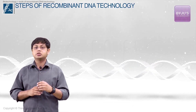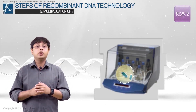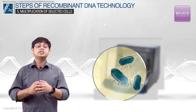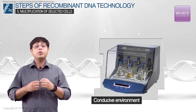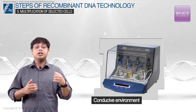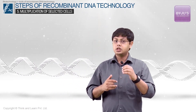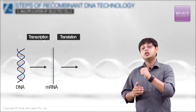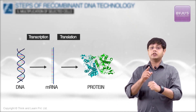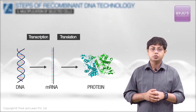Step 4 is crucial as our main motive is to derive the protein product of the gene of interest. Once the desired host cells are selected, the final step — step 5 — is to clone the selected cells by providing them a conducive environment where they will flourish and grow, so that our gene of interest gets expressed. That is, the DNA is transcribed to mRNA, which is then translated into a protein — our desired product — which can be harvested for human use.